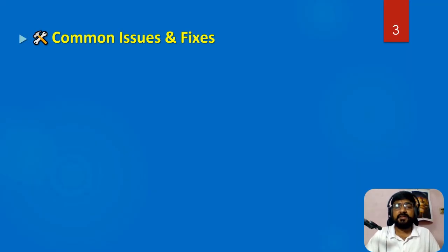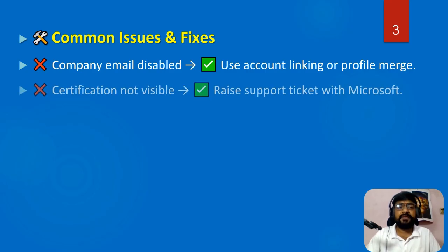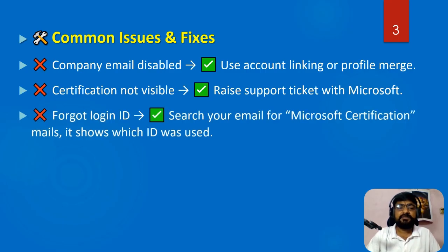Let's check the common issues and fixes I will cover in this session. The first issue is that the company email ID gets disabled — whenever you leave your current company, your mail ID is disabled, making it very difficult to retrieve certifications. I will explain the linking process: how you can link your company Microsoft ID to your personal Microsoft ID. The second issue is certification not visible, in which case you can raise a support ticket with the Microsoft team.